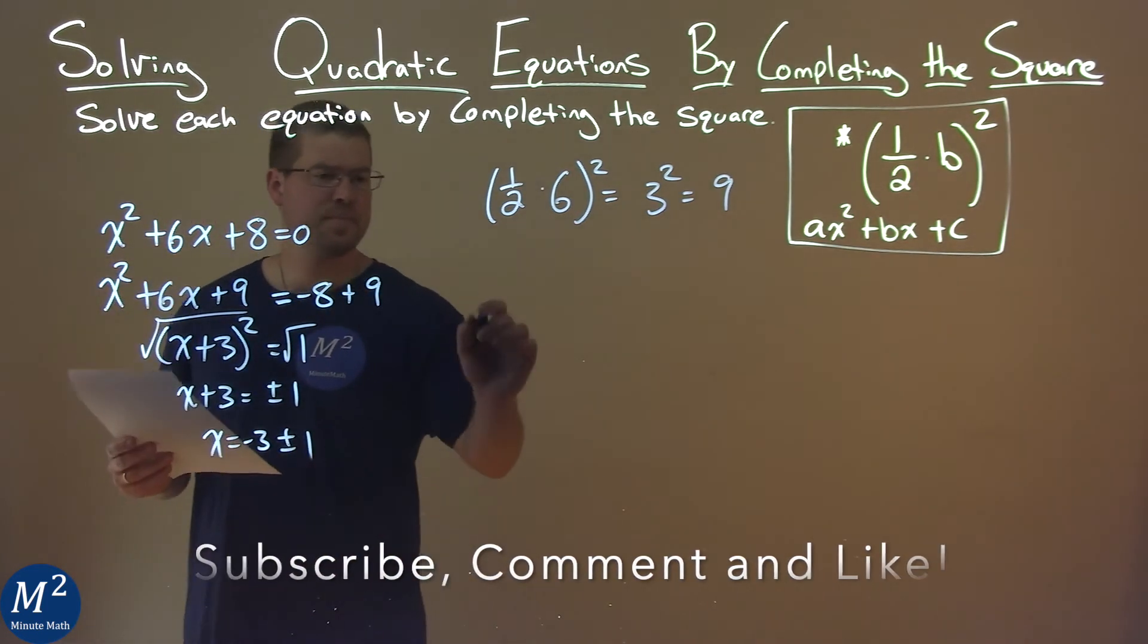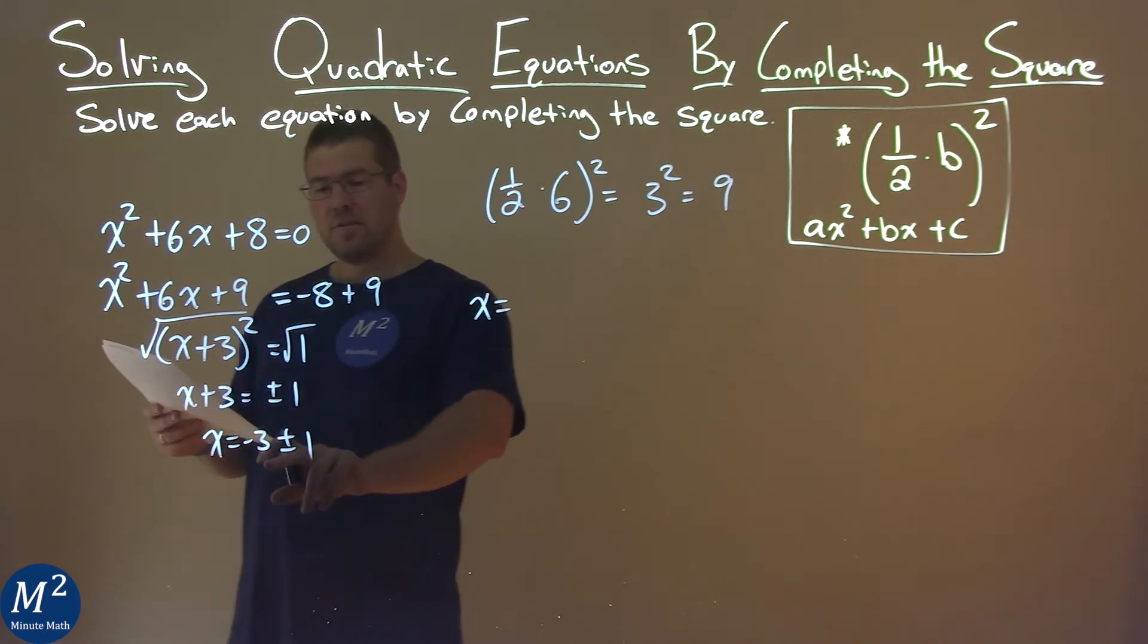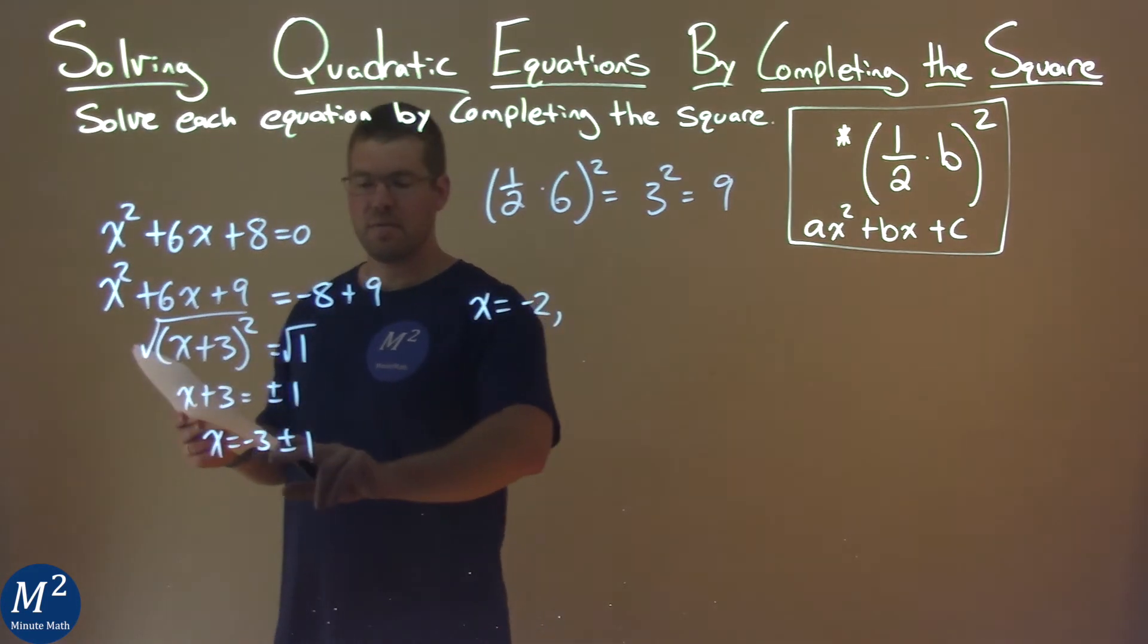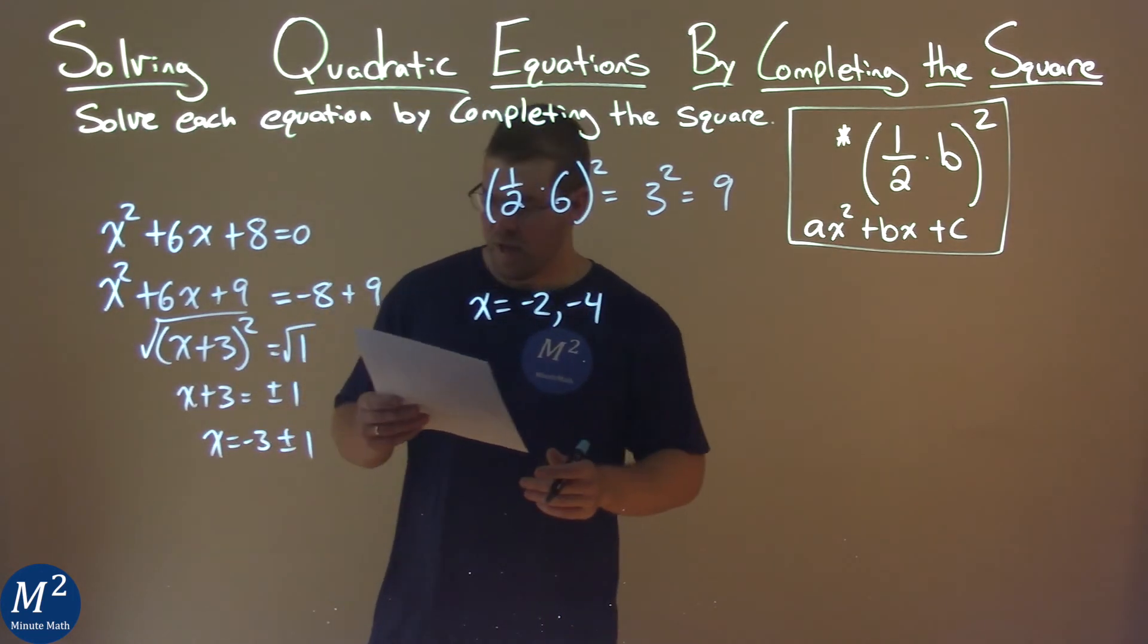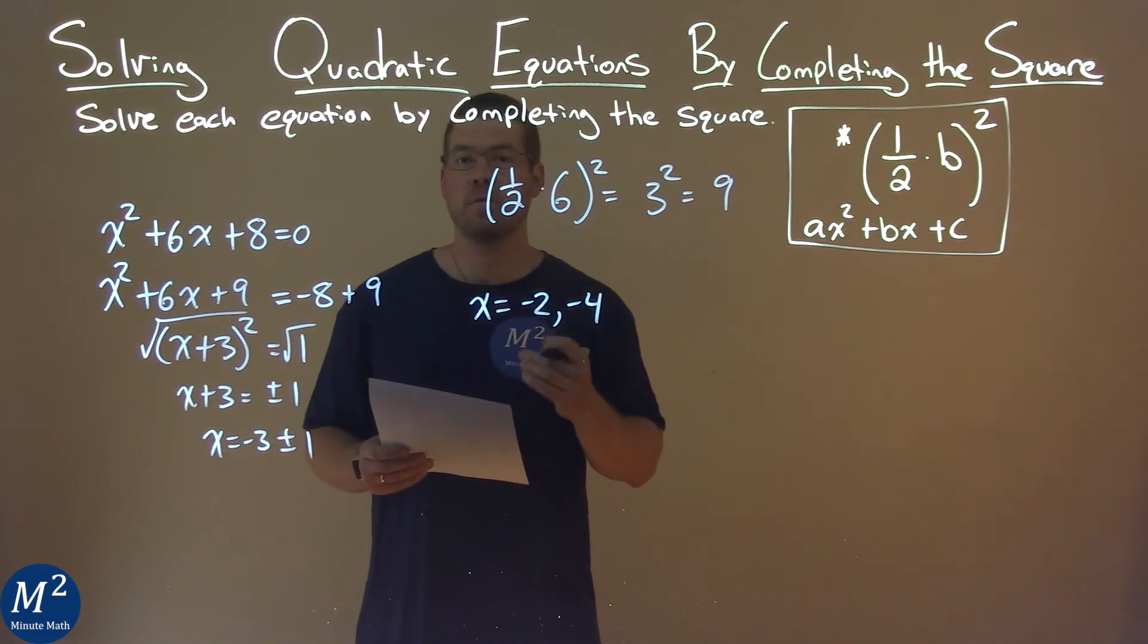So, what are these two solutions? Let's do each one individually. Negative 3 plus 1 is negative 2. Negative 3 minus 1 is negative 4. And so, our two solutions are x equals negative 2 and negative 4.